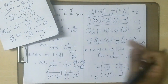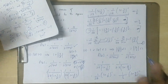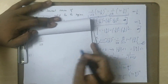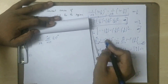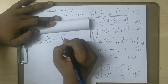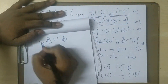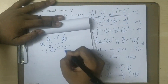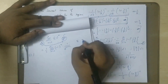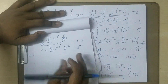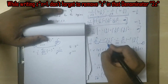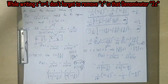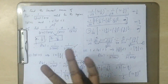So this is 1 by 2 times summation n equal to 0 to infinity of minus 1 to the power n, into 1 by z power n plus 1. And the second part: 3 power n by z power n plus 1. So that is the first condition solution for mod z greater than 3.